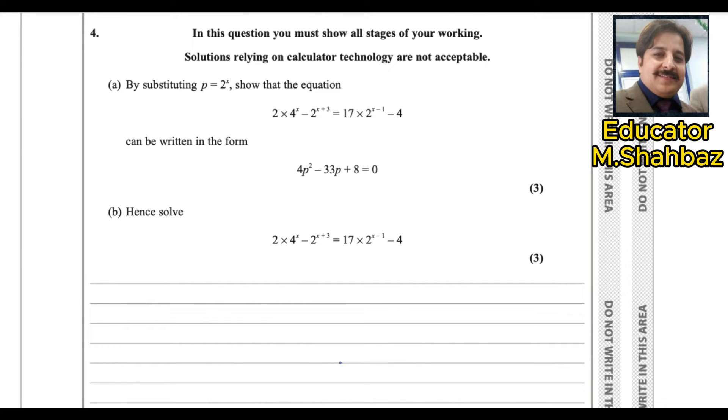By substituting p equals to 2 power x, show that the equation 2 multiply 4 power x minus 2 power x plus 3 equals to 17 multiply 2 power x minus 1 minus 4. This equation can be changed if you substitute the value of 2 power x. So better you make all values whose power is x, convert them into this form, 2 power x.